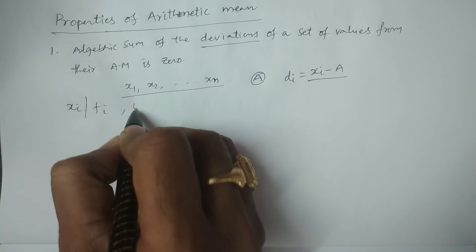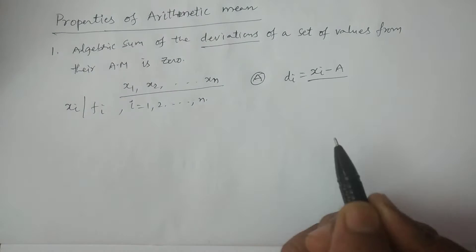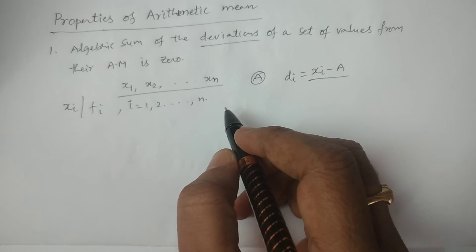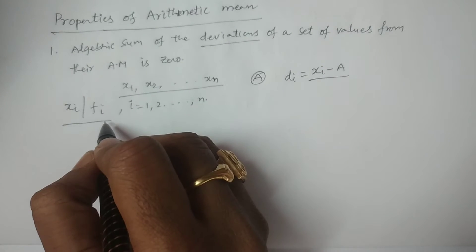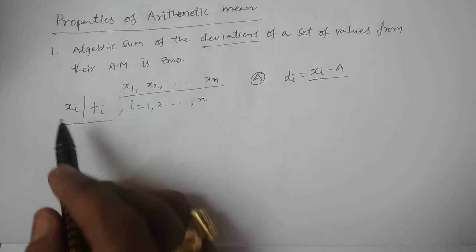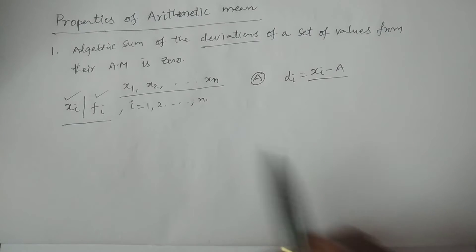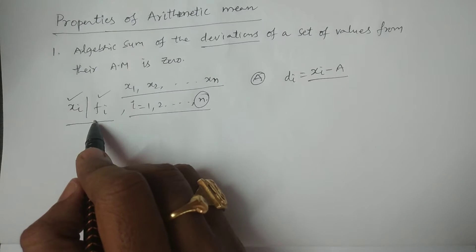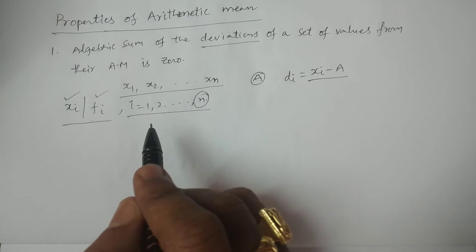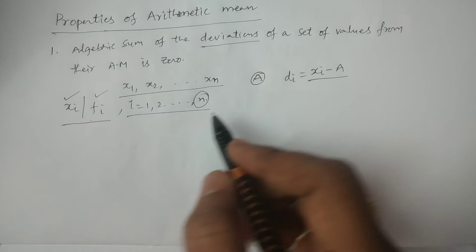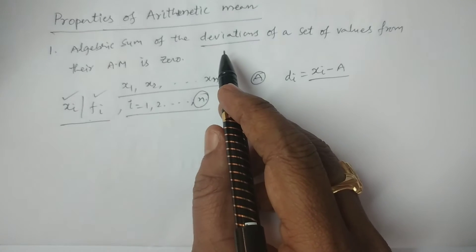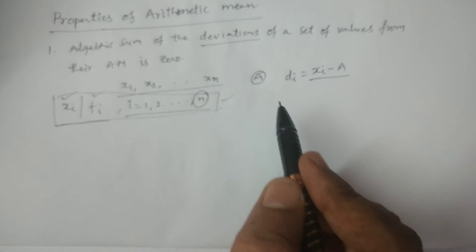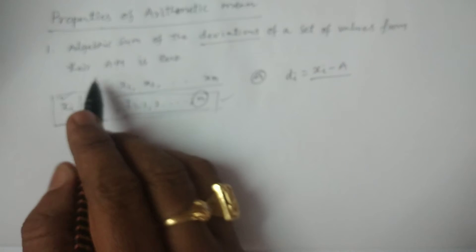For example, xi by fi, i is equal to 1, 2 and so on, n is a grouped frequency distribution. Generally it is represented as xi by fi, which means the data consists of observation xi and frequency fi. If n set of values are there, this is known as a grouped frequency distribution. For a frequency distribution, this property is expressed as the algebraic sum of the deviations of a set of values xi by fi from their arithmetic mean is zero.